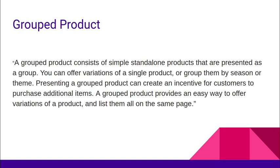The first new product type is group product. A group product is simply a collection of simple or standalone products. The end user can buy products separately or as a group — it totally depends on the customer's choice. The store owner has the dynamic function to combine simple products into a new group. A group product provides an easy way to offer variations of a product and list them all on the same page.